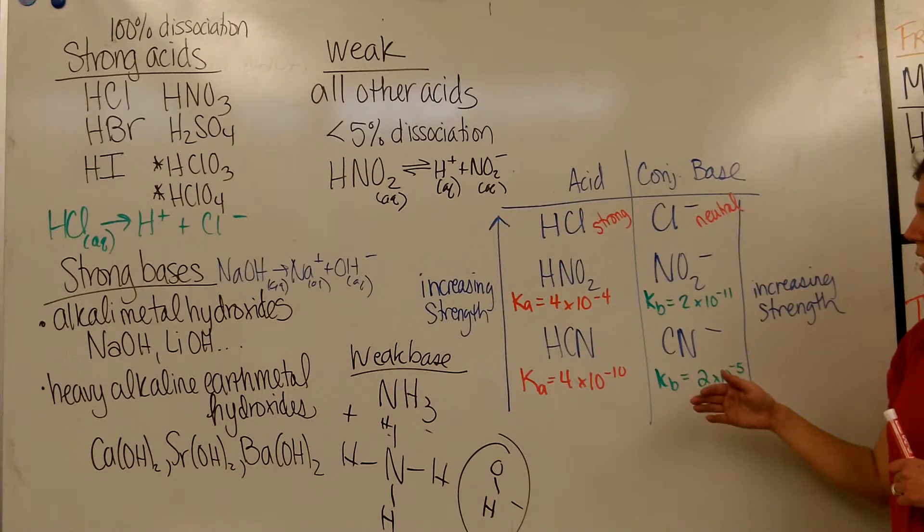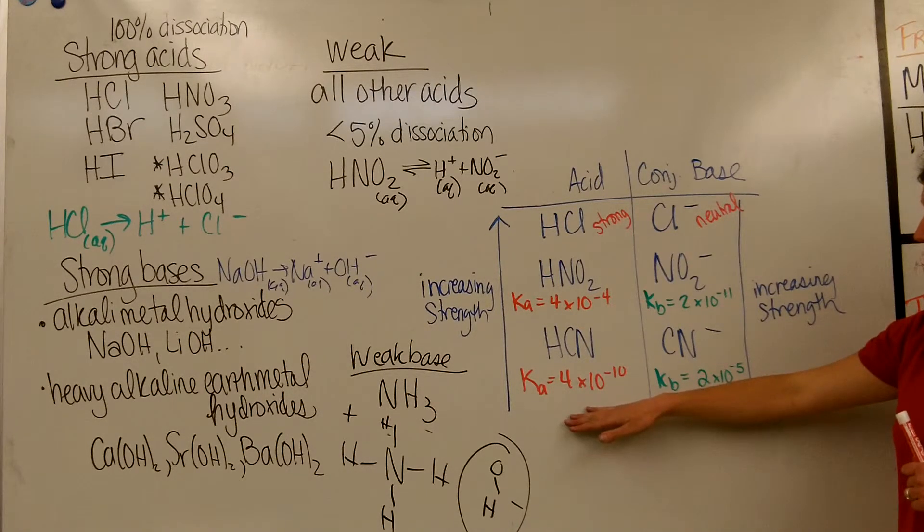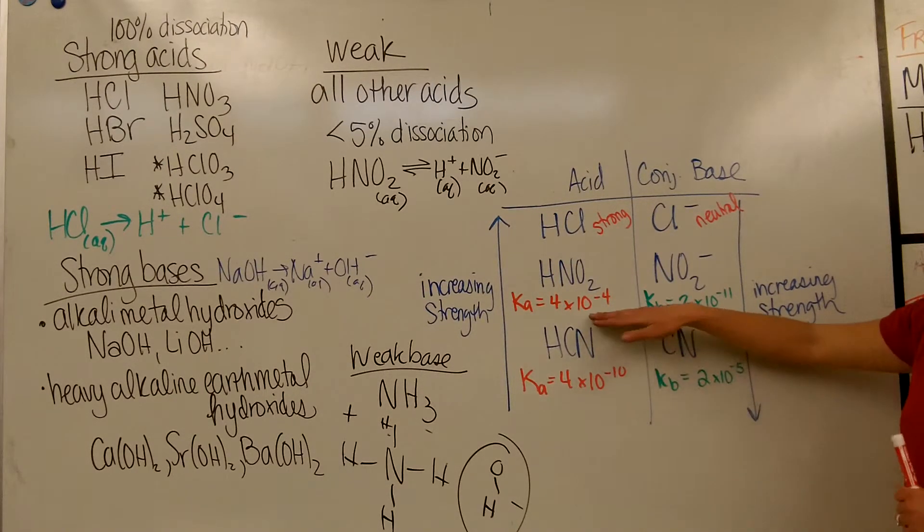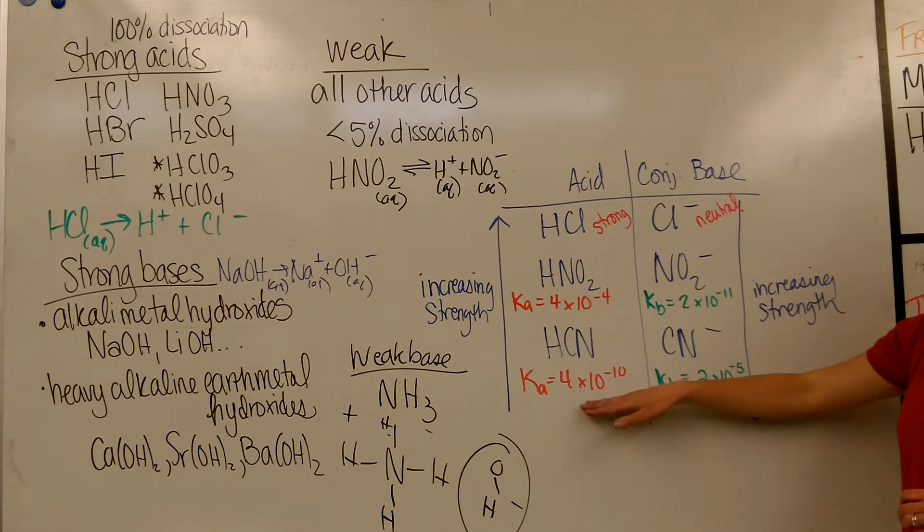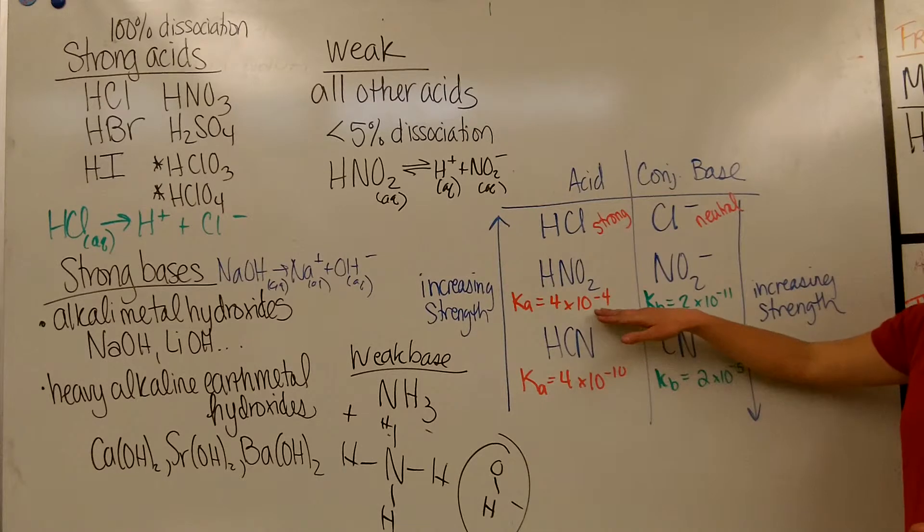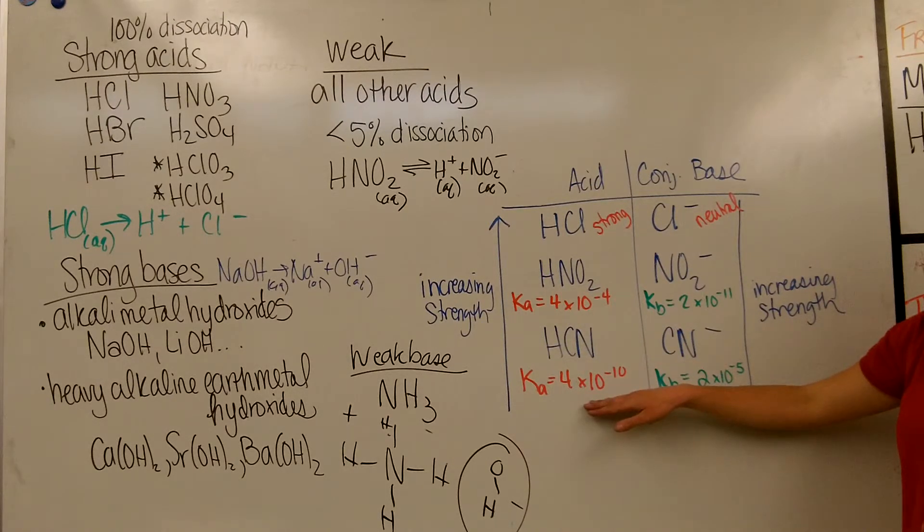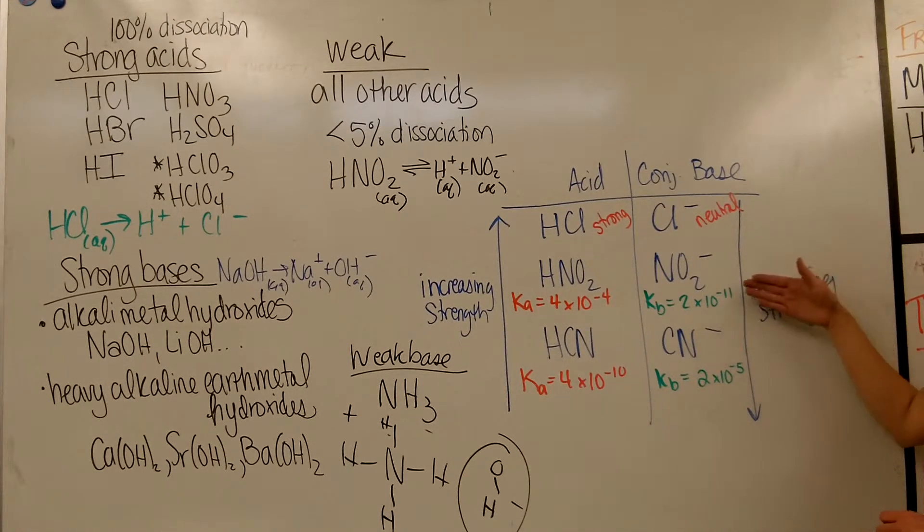So notice how a K-value relates to the acid strength. So HNO2 has a K-value of 4×10^-4, HCN has a K-value of 4×10^-10. That means HNO2 is going to dissociate more when you stick it in water, so HNO2 is a stronger weak acid than HCN is.